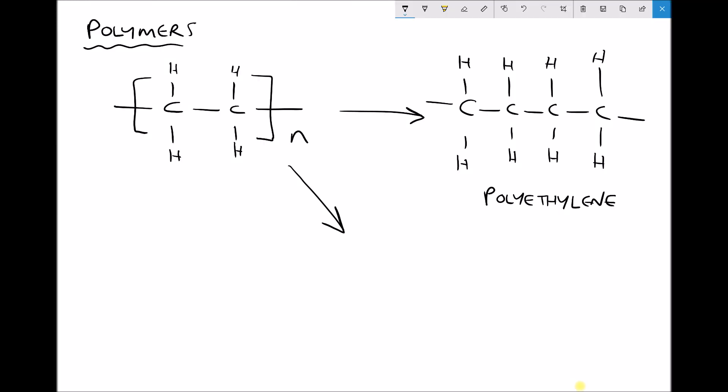In an earlier tutorial we looked at the formation of polyethylene and we talked about how we started with a monomer C2H4 and from that we were able to form polymers with very large backbones of carbon atoms.